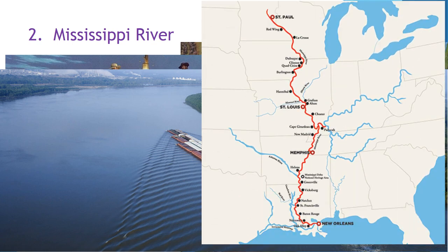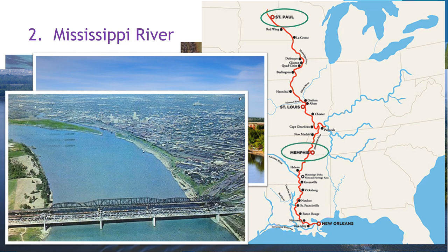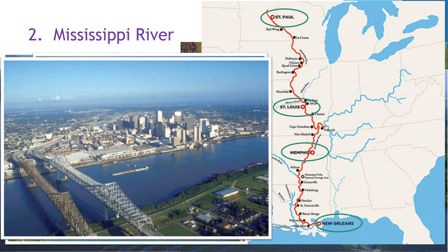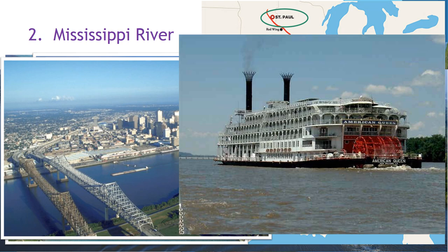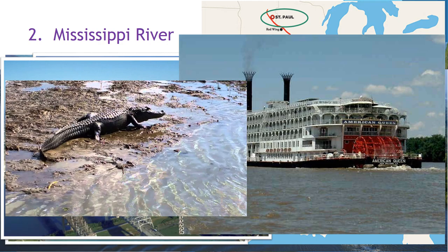Important cities dot the shoreline of this river, including St. Paul, Minnesota; Memphis, Tennessee; St. Louis, Missouri; and New Orleans, Louisiana. The Mississippi River is famous for its large steamboats, which are recognizable by their big paddle wheels in the back. The farther south you go down the Mississippi, the more likely you are to spot an alligator.